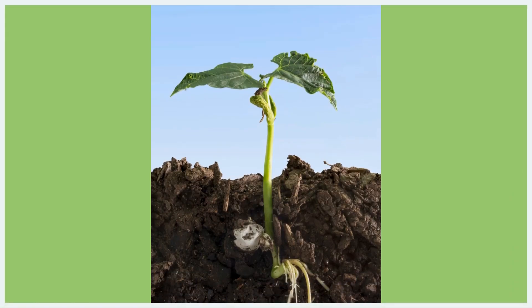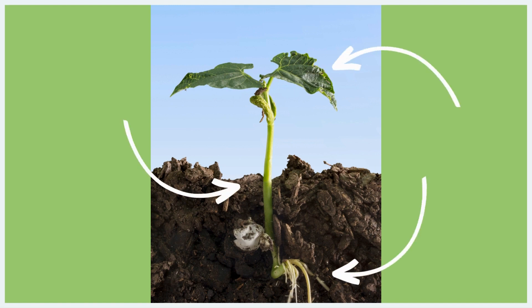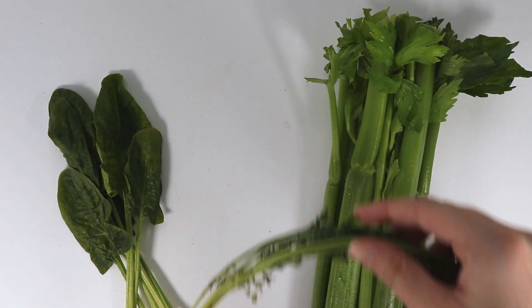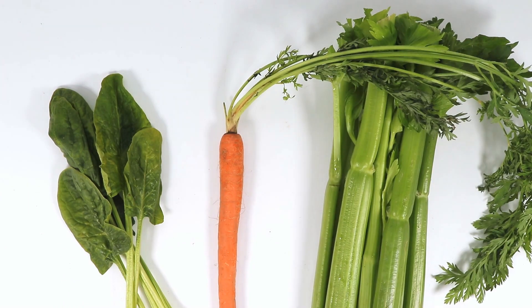In this set of activities, your classroom will explore plant parts. There are three main parts of a plant: roots, stems, and leaves. Each part plays a role in helping the plant grow and be healthy. We are able to eat the roots, stems, or leaves of most vegetables.